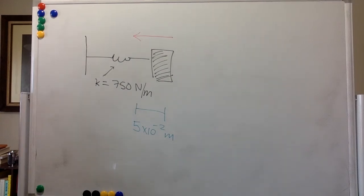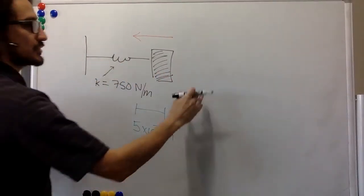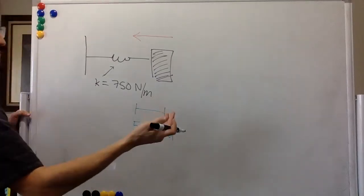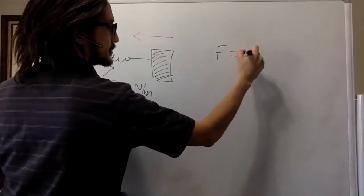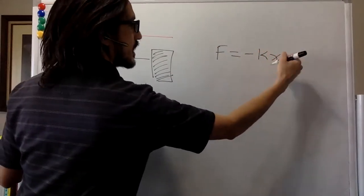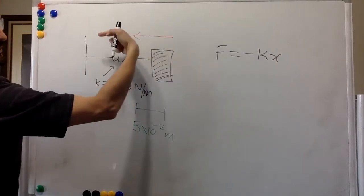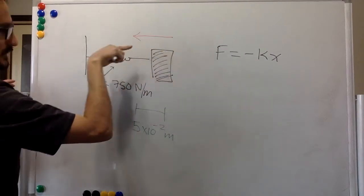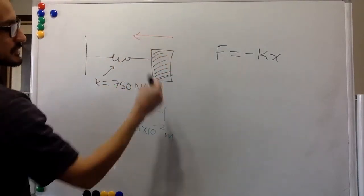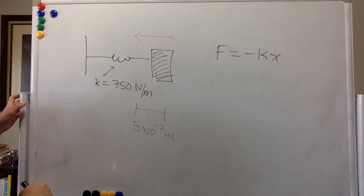Well, this is a spring. So it's going to follow Hooke's law. It says that the force is going to be minus kx. That's it, right? So if the force is in this direction, then the compression is in this direction, the displacement. And the force produced by the spring is going to be in the opposite direction.